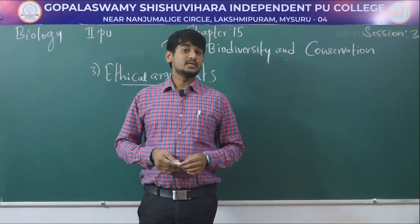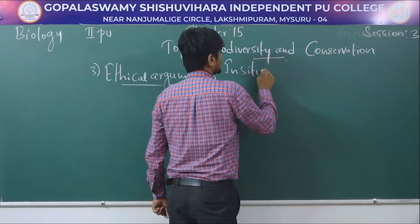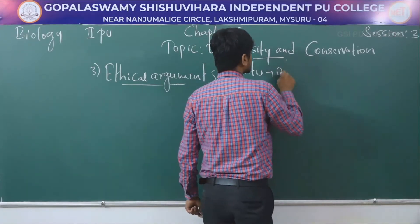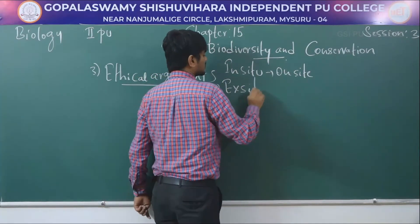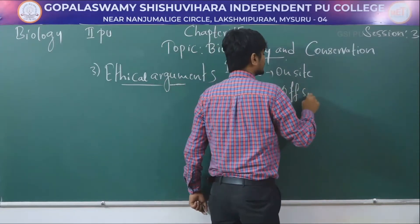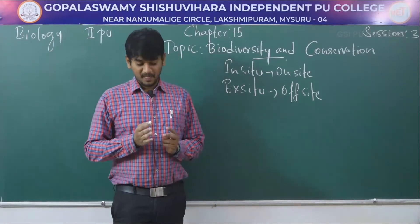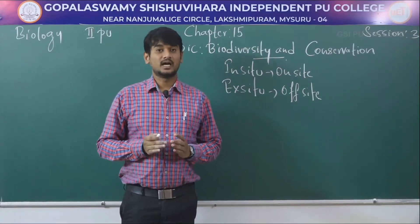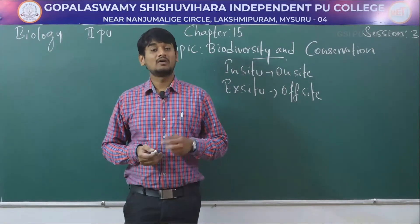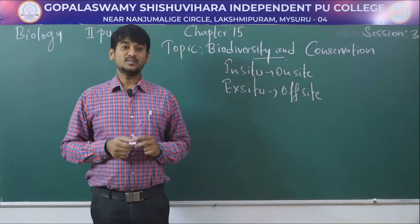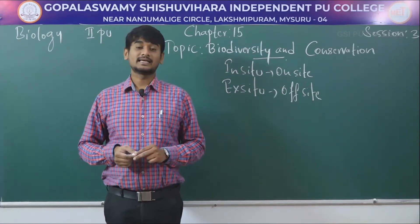Biodiversity conservation is of two types: one is in-situ conservation and the other is ex-situ conservation. In-situ conservation is also called on-site conservation, and ex-situ conservation is also called off-site conservation. In ex-situ conservation, plants are protected in botanical gardens and animals are protected in zoo gardens.